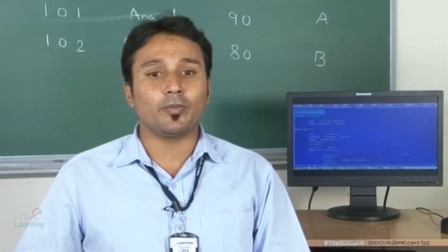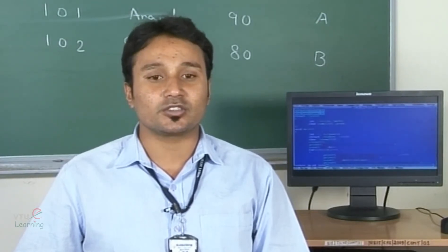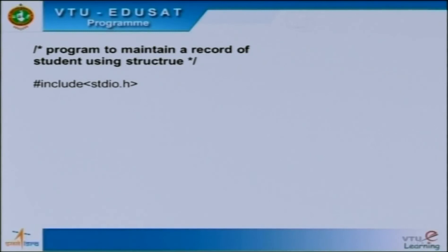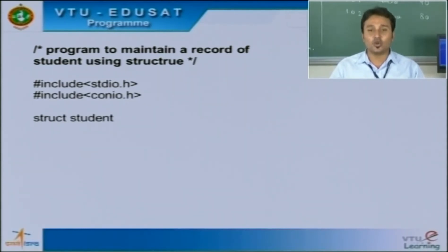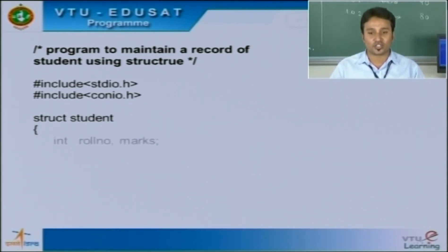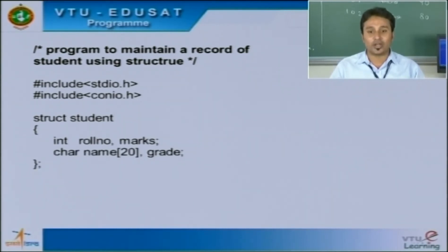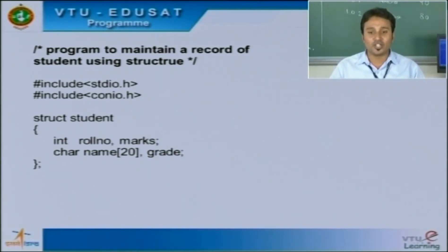Now let us look into the program. The first line is #include stdio.h, the preprocessor directive with the standard input-output header file, followed by #include conio.h for console input-output. The next line is struct student, which is the declaration of the structure. As discussed, struct student uses the keyword struct followed by the structure name, with fields: roll number and marks of integer data type, and name and grade of character data type. Then we terminate the structure.